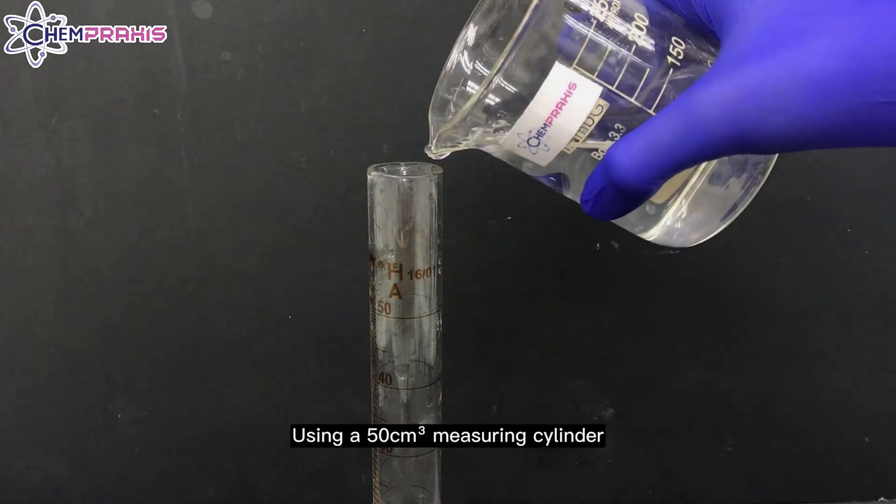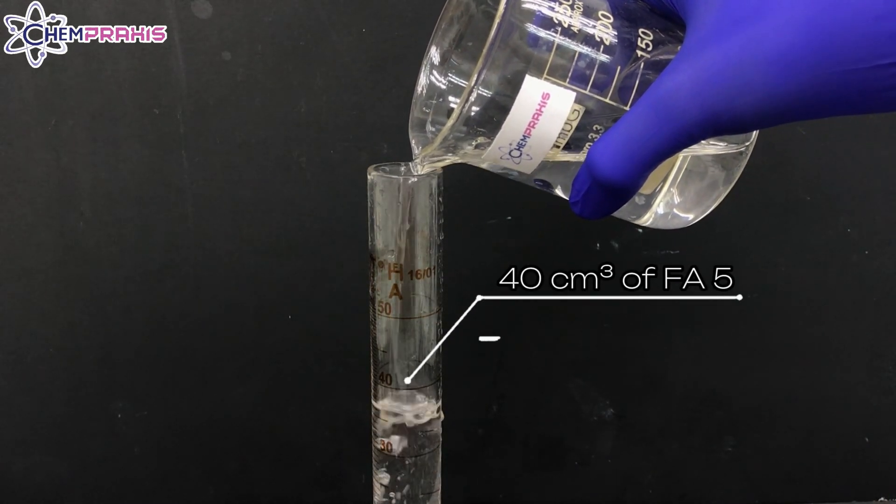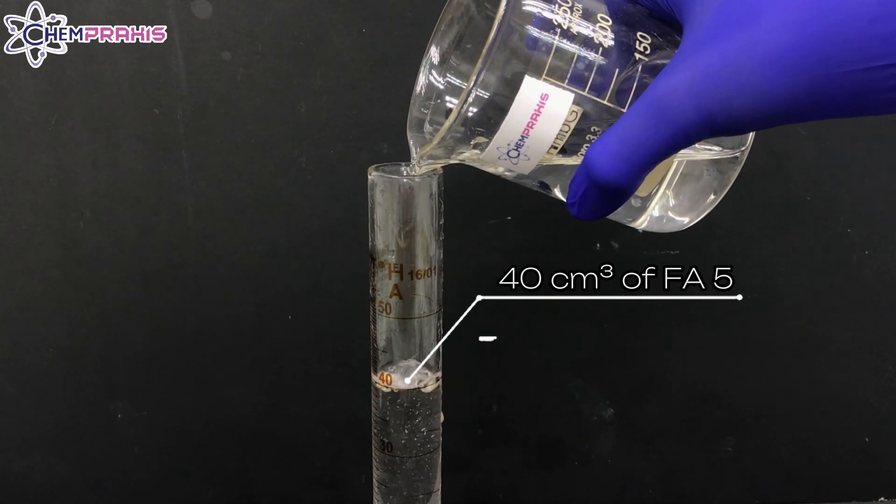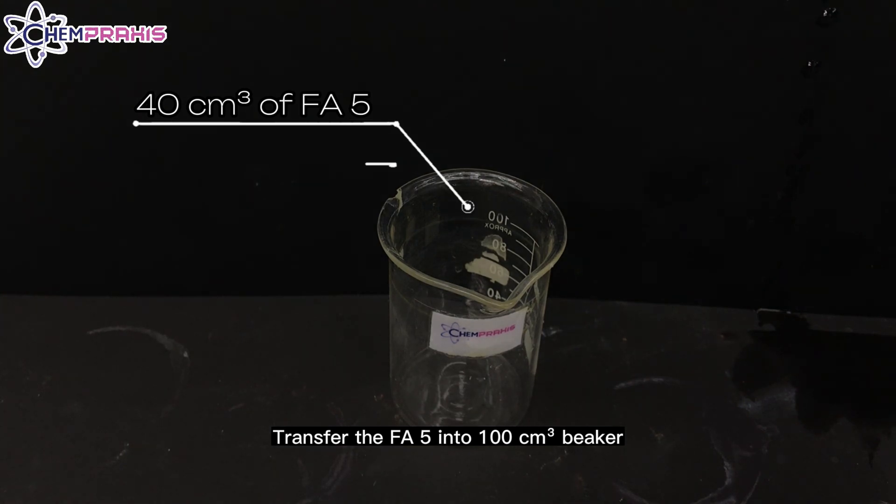Using a 50 cm³ measuring cylinder, we'll measure 40 cm³ of FA5. Transfer the FA5 into a 100 cm³ beaker.